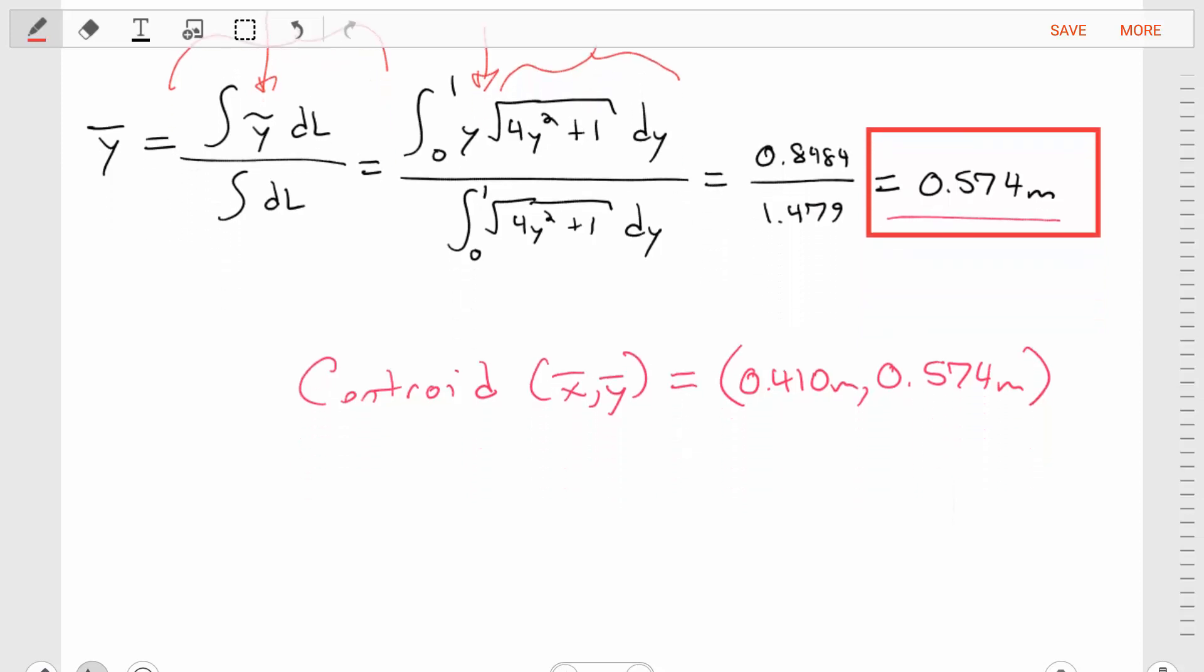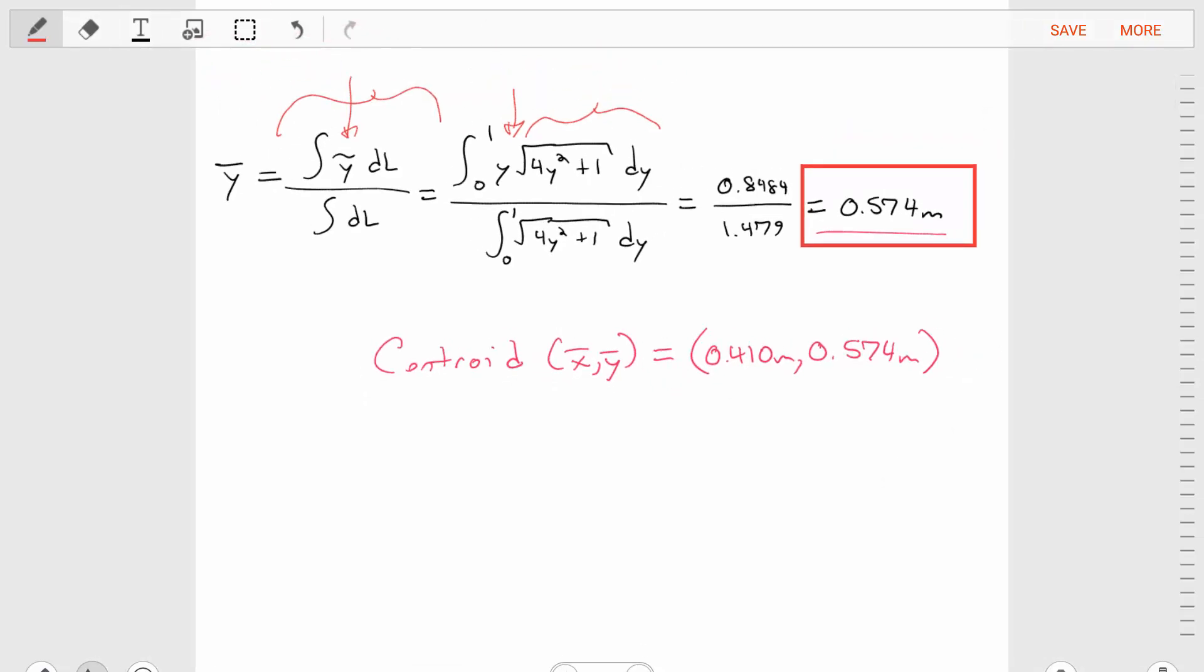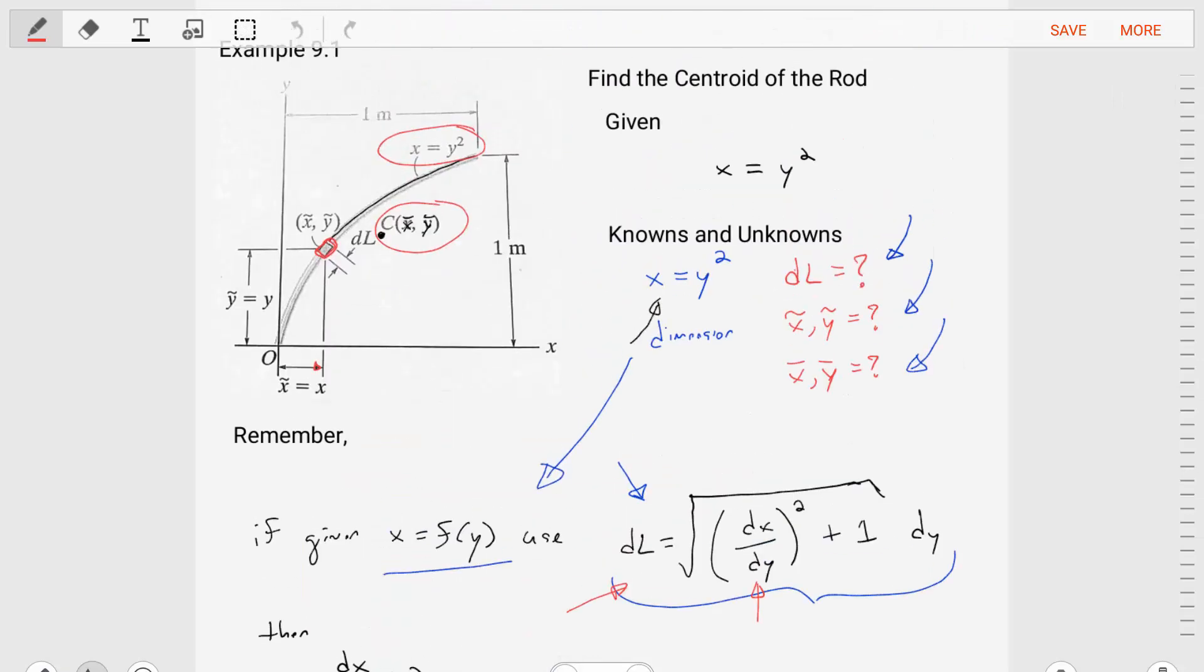And so the centroid of this line, or the rod, is set at 0.41 meters and 0.574 meters, respectively. In solving these centroid problems, it's always the most critical steps are carefully identifying the differential element as well as the position of that differential element. So before you go and do the calculus, always make sure that you have found those properly, that you understand what those are. And drawing on the diagram where those things are, drawing those dimensions is going to help you a bunch.